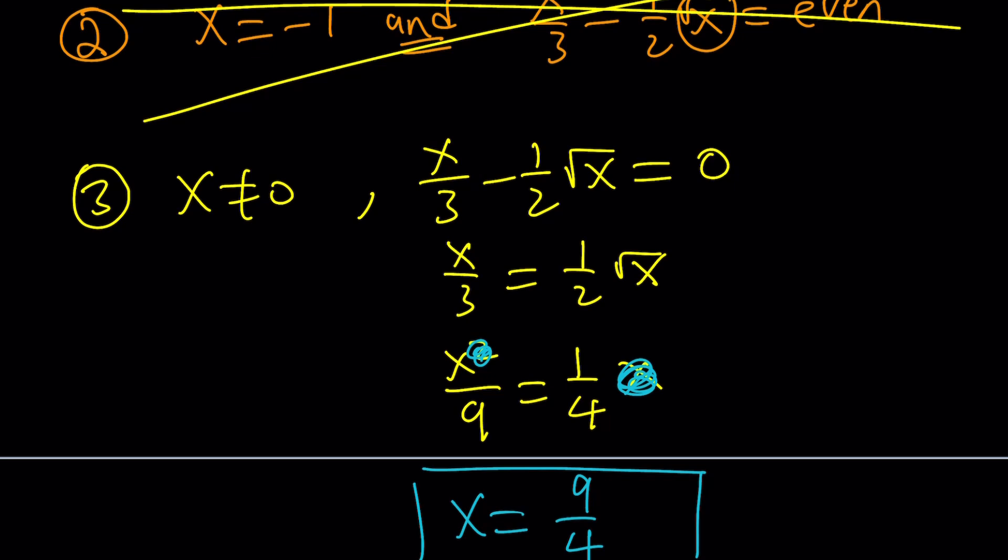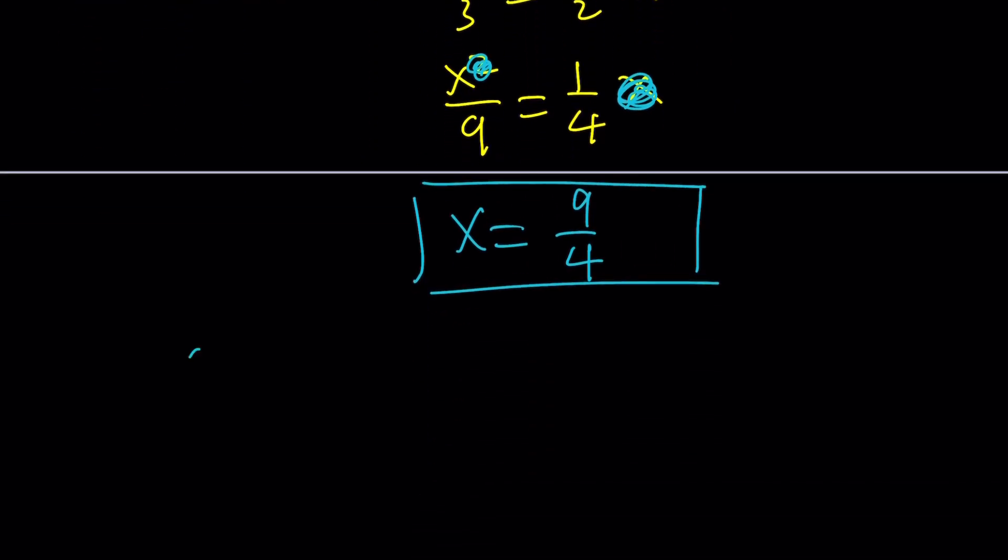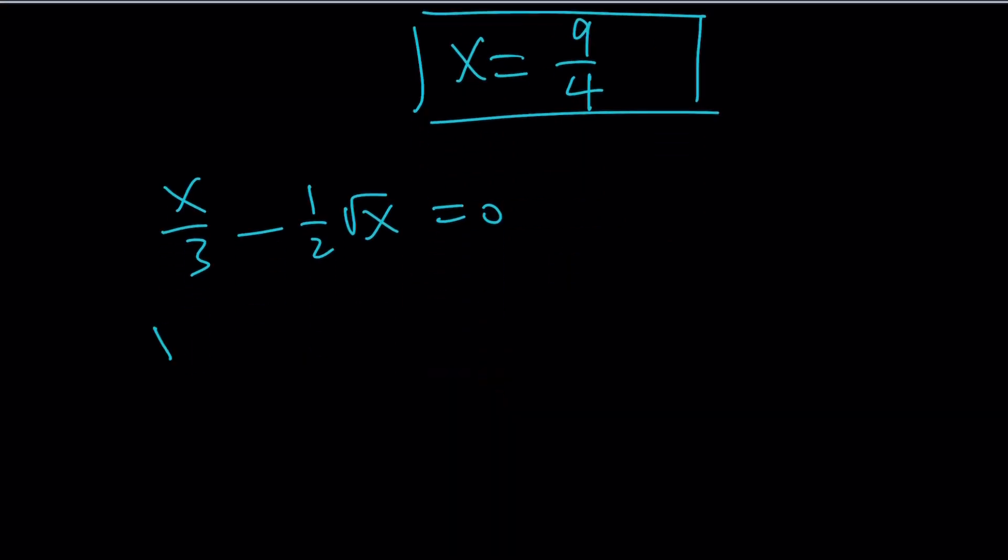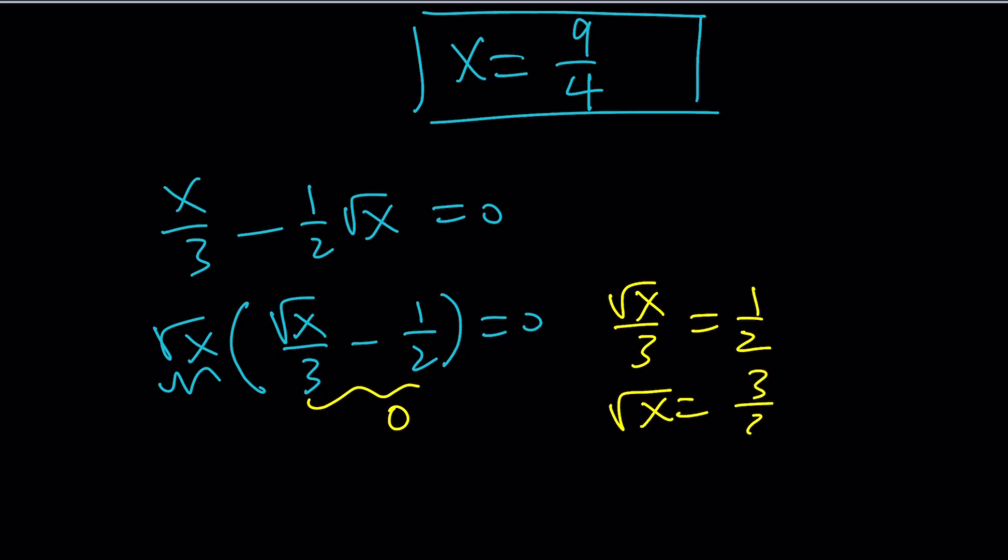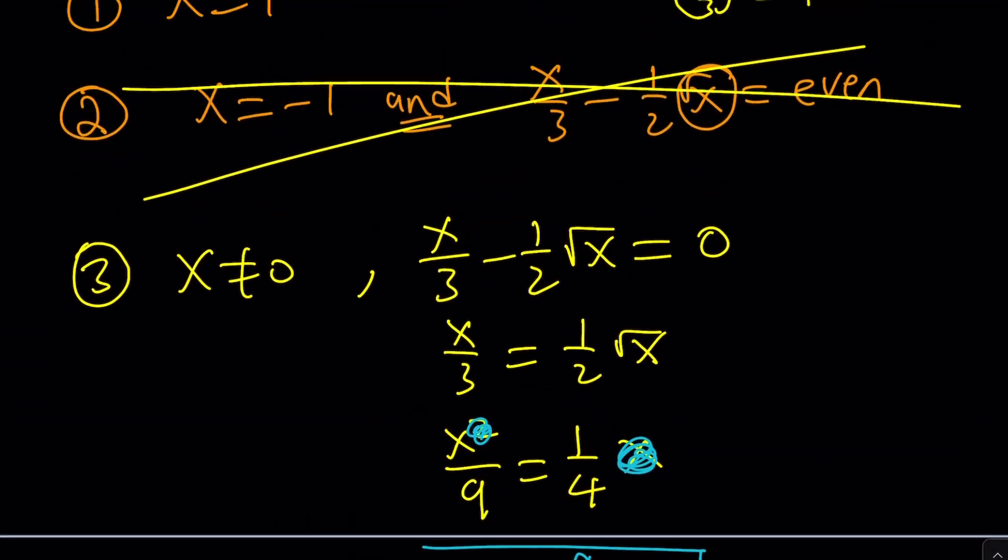You could also solve this problem a little differently, like x over 3 minus 1 half of square root of x equals 0. You can take out a square root of x, and then you're going to get square root of x over 3 minus 1 half is equal to 0. Square root of x cannot be 0, because x cannot be 0. Therefore, this needs to be 0. Square root of x over 3 is 1 half. Square root of x is 3 halves, and then x is 9 fourths. In this case, squaring both sides is okay. It does not introduce extraneous solutions.